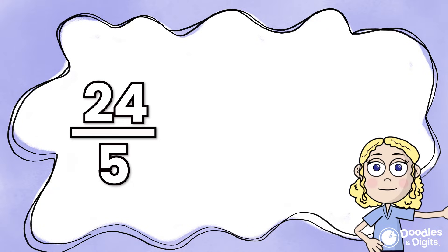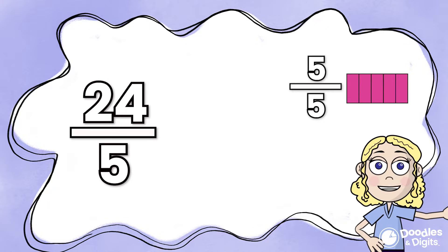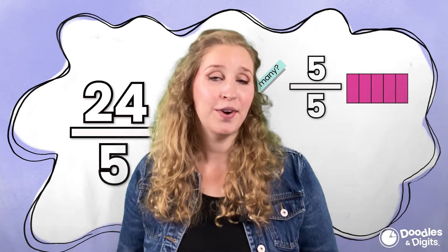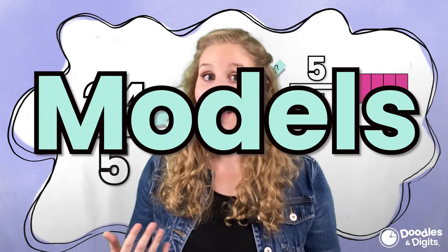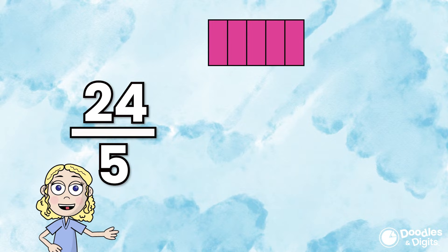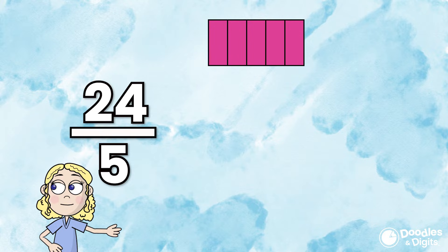So let's look at this example problem right here. 24 fifths. We can think how many groups of fifths can we take out of 24 fifths? Let's look at a visual to help us. Models can be really helpful in this situation. All right, so 24 fifths. We're going to take out one group of five fifths.